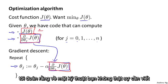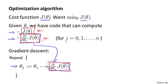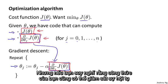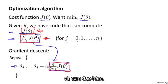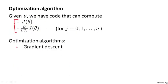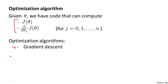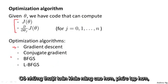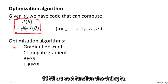For gradient descent, technically you don't actually need code to compute the cost function J of theta — you only need code to compute the derivative terms. But if you think of your code as also monitoring convergence, we'll just think of ourselves as providing code to compute both the cost function and the derivative terms. So having written code to compute these two things, one algorithm we can use is gradient descent. But gradient descent isn't the only algorithm we can use — there are other algorithms, more advanced and more sophisticated ones, that if we only provide them a way to compute these two things, can be different approaches to optimize the cost function for us.